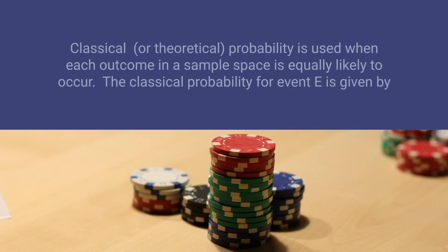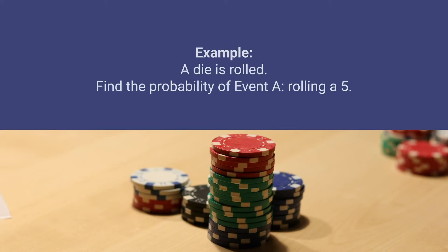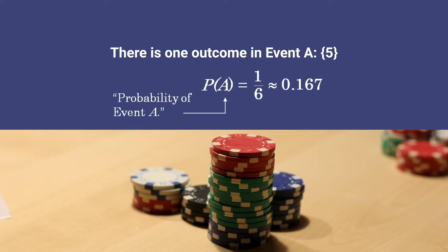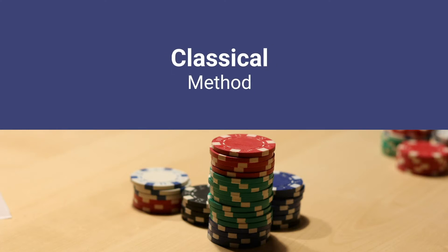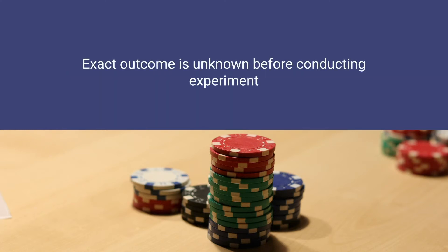Classical or theoretical probability is used when each outcome in a sample space is equally likely to occur. The classical probability for event E is given by P = (number of outcomes in event) / (total number of outcomes in sample space). Example: a die is rolled, find the probability of event A — rolling a 5. The outcome of event A is 5, and the probability of event A is 1/6 = 0.167. This is the way we calculate using the classical method.